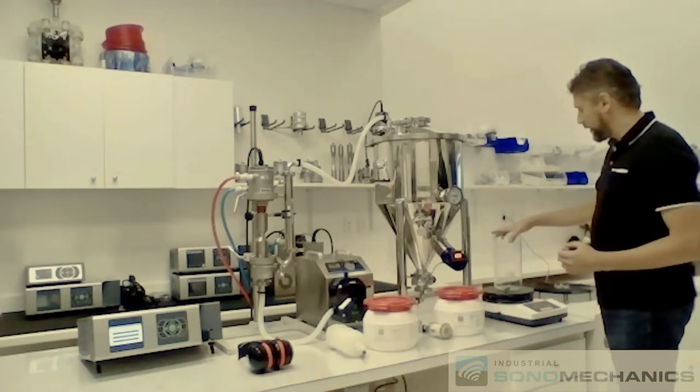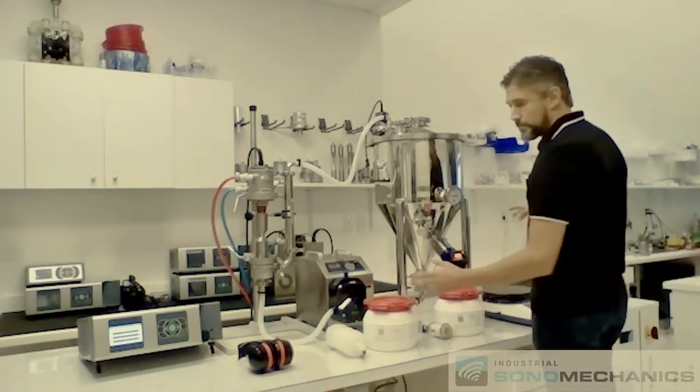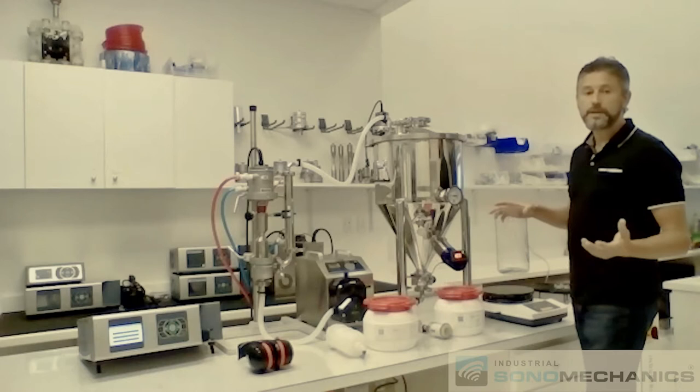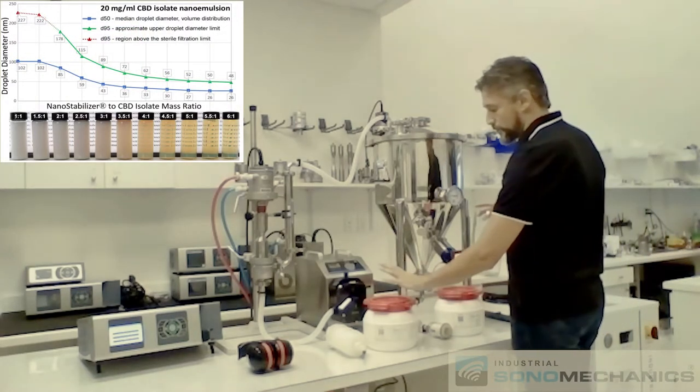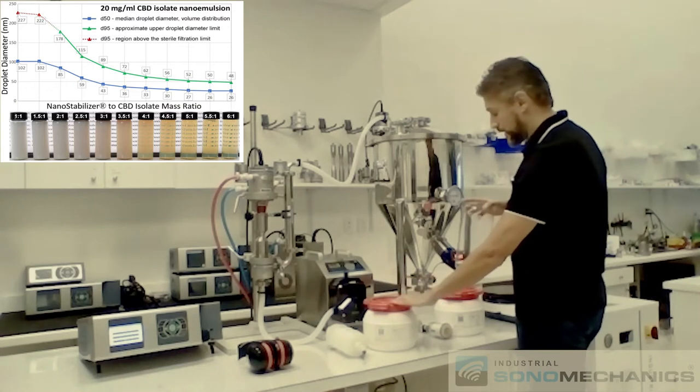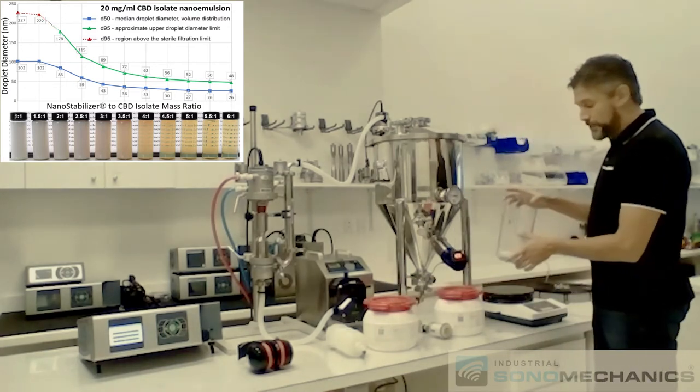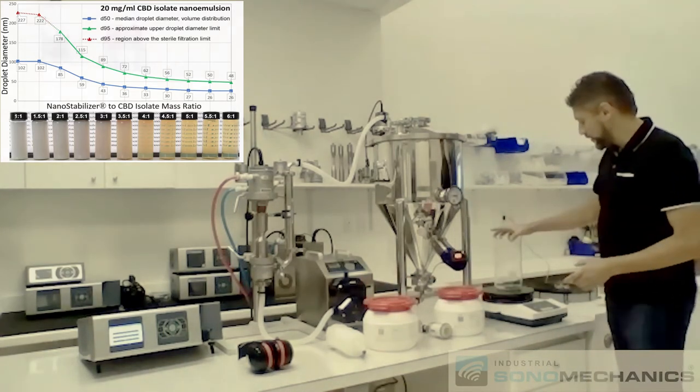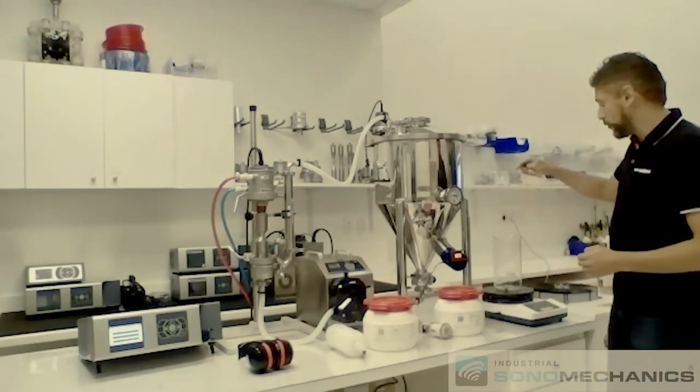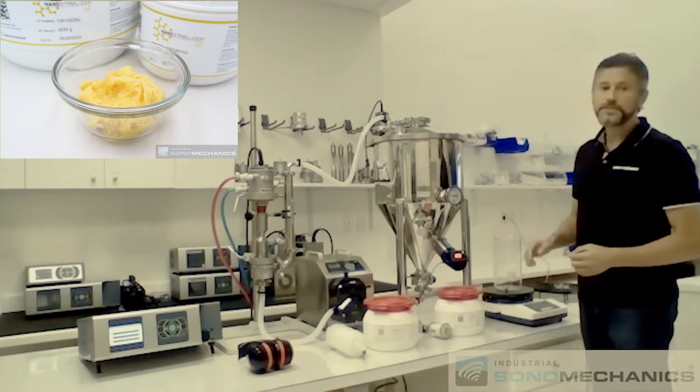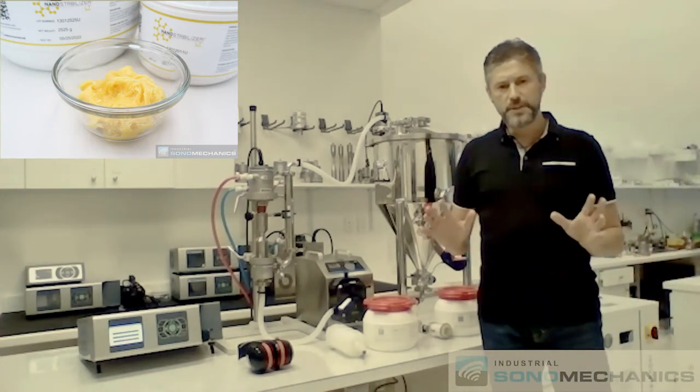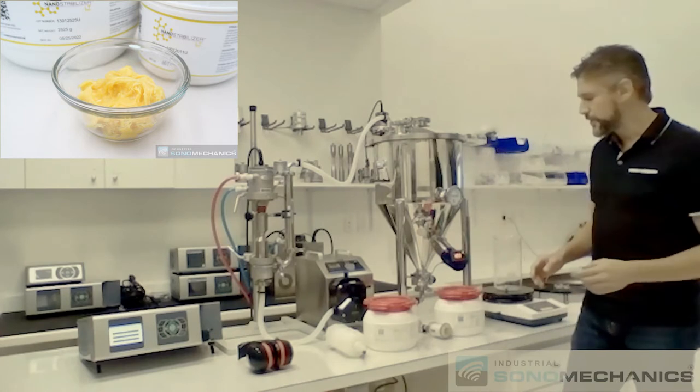As the first step, you would take your nanostabilizer. Let's say we're making a liquid translucent nanoemulsion. You would take the appropriate amount of nanostabilizer LT, place it in this container. That would be on the magnetic stirrer or you could use an overhead mixer. You would need to warm it up to melt it. It melts very easily at about 50 degrees Celsius. It's pretty much in the liquid state.